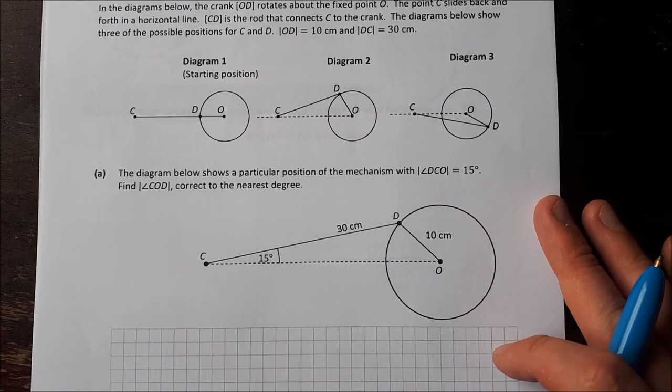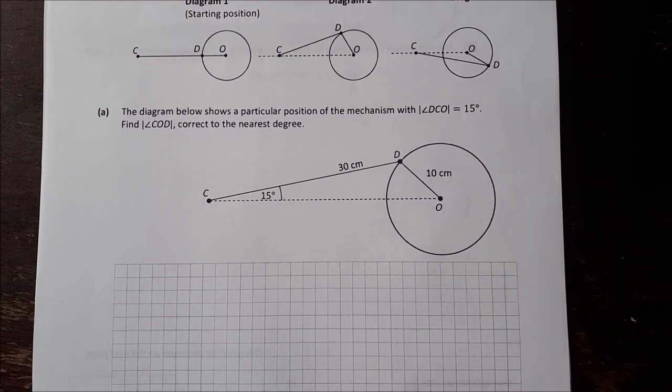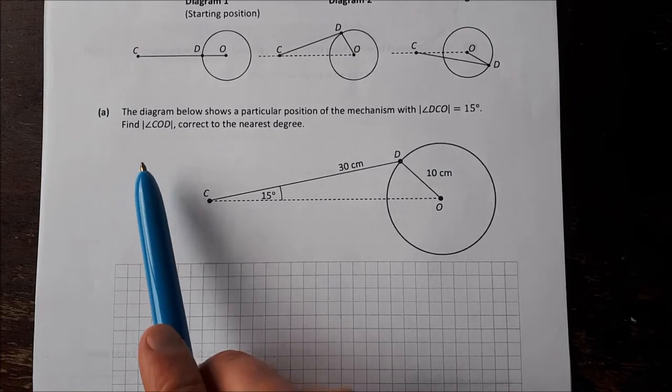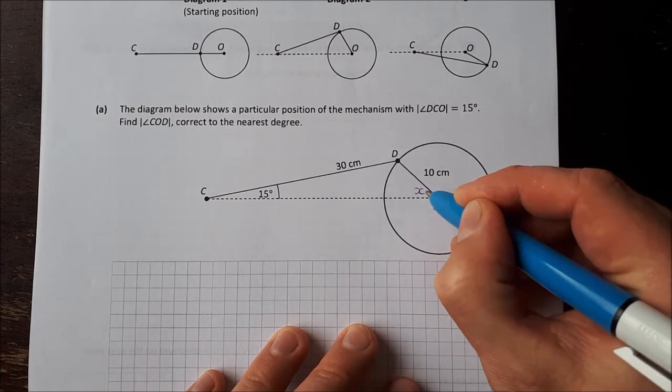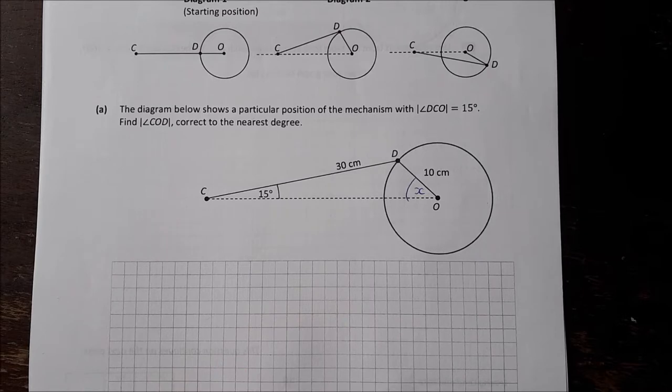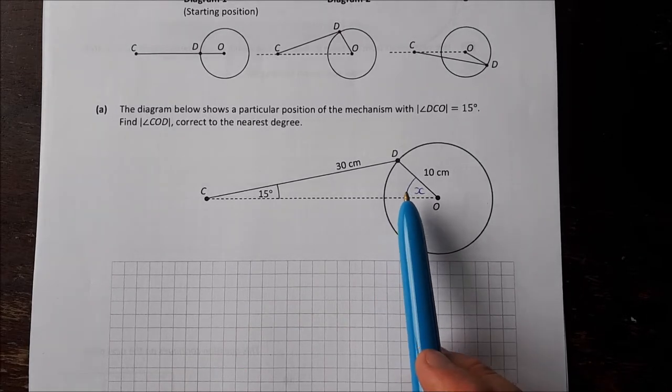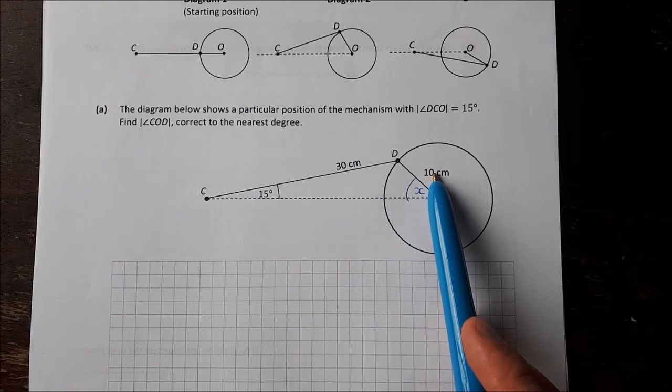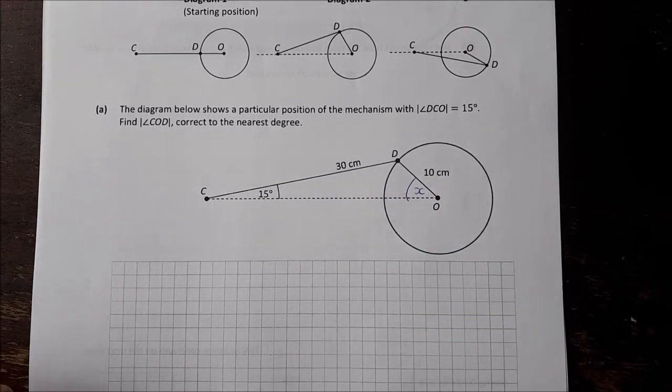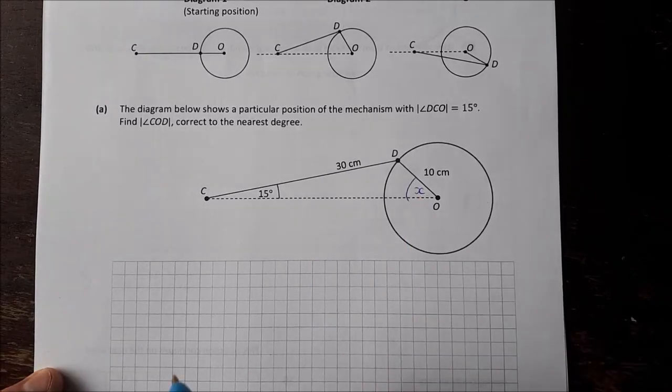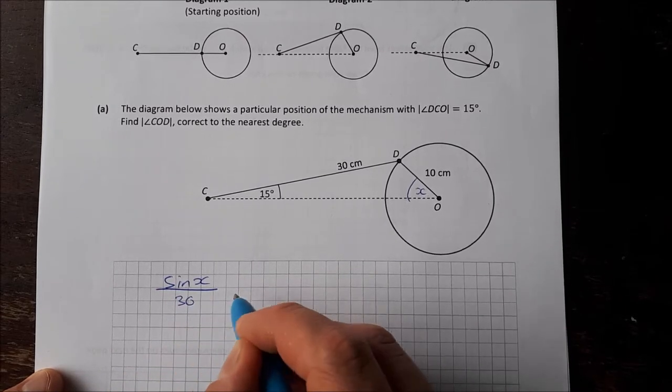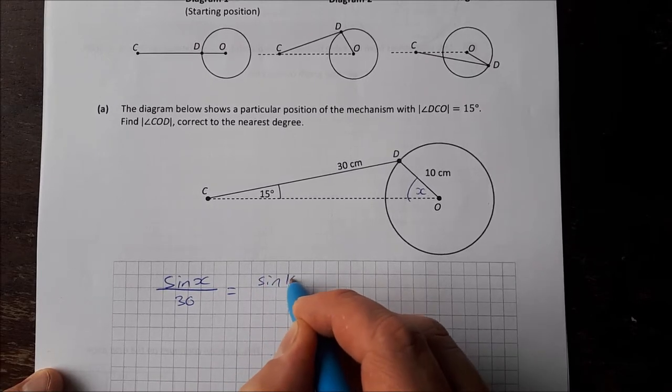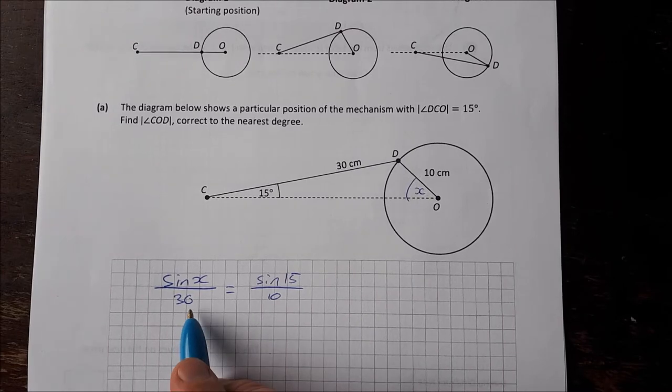Here is part A. The diagram below shows a particular position of the mechanism with the angle DCO equal to 15 degrees. Find the angle COD, that would be this angle here, let's call it X. For that angle we're going to use the sine rule. We have an angle and the side opposite, we are looking for this angle and we have the side opposite. When I'm doing the sine rule I always push the one that I want in the top left. So sine of X over 30 is equal to the sine of 15 over 10.